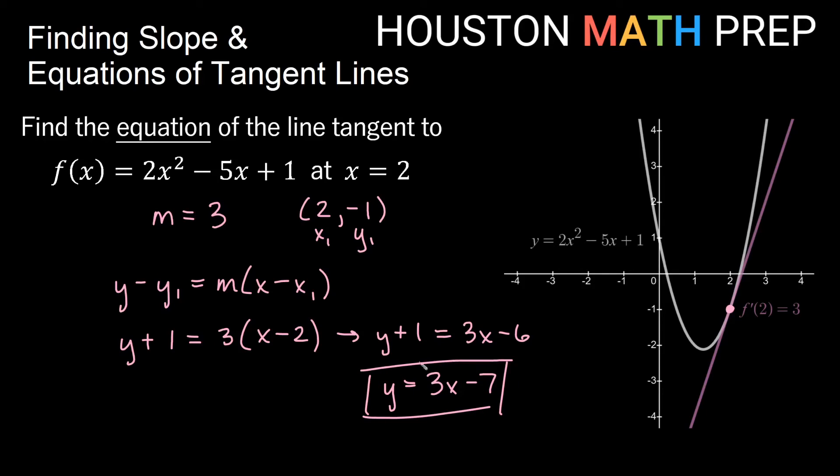So our tangent line has a slope of 3 and a y-intercept of negative 7.